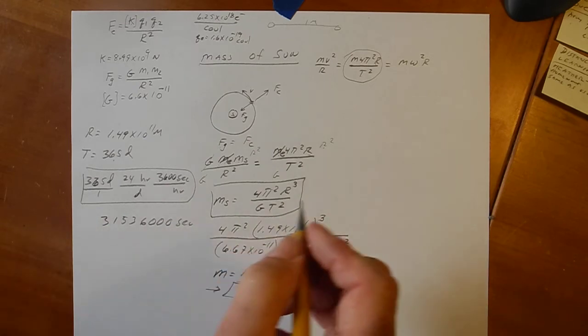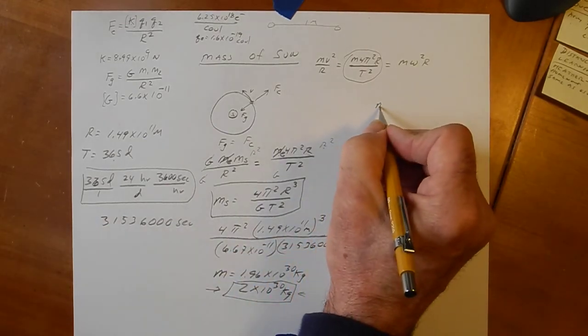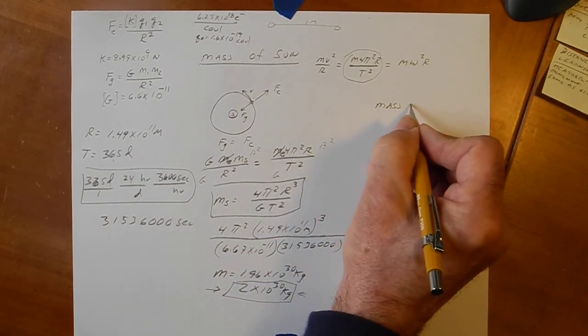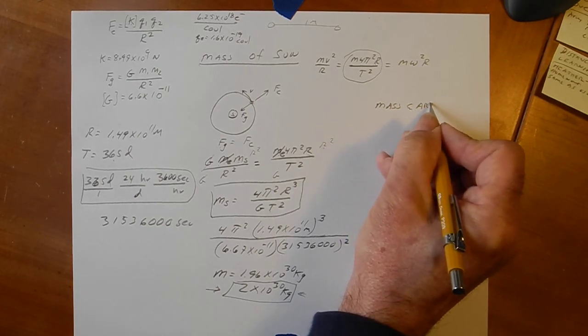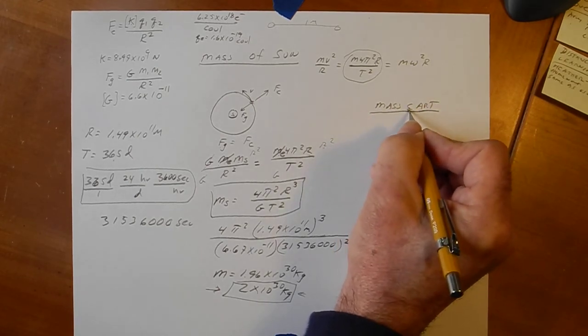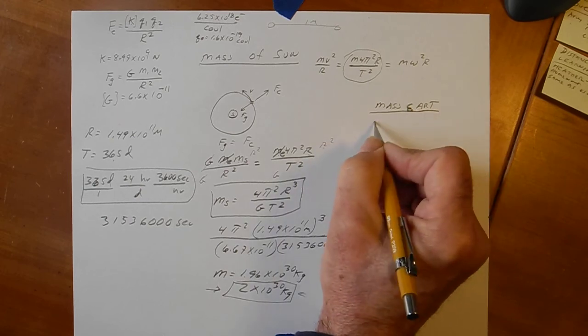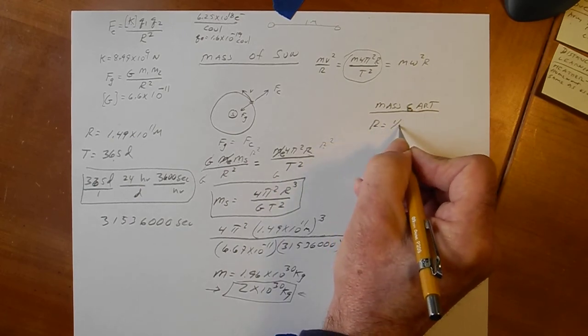So, what I want you guys to do is I want you guys to find the mass of the earth. Okay. Let me walk you through this a little bit using these numbers. Okay. The radius is one quarter million miles.